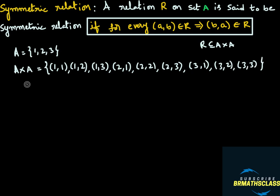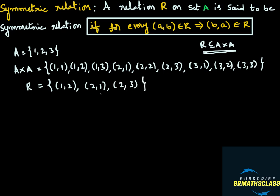I will take a relation R on A. When we say R is a relation on A, it is a subset of A cross A. So I will take a subset of A cross A. For example, I will take R = {(1,2), (2,1), (2,3)}. Is R a relation on A? All the elements present in relation R are present in A cross A — yes. So R is a relation on A.